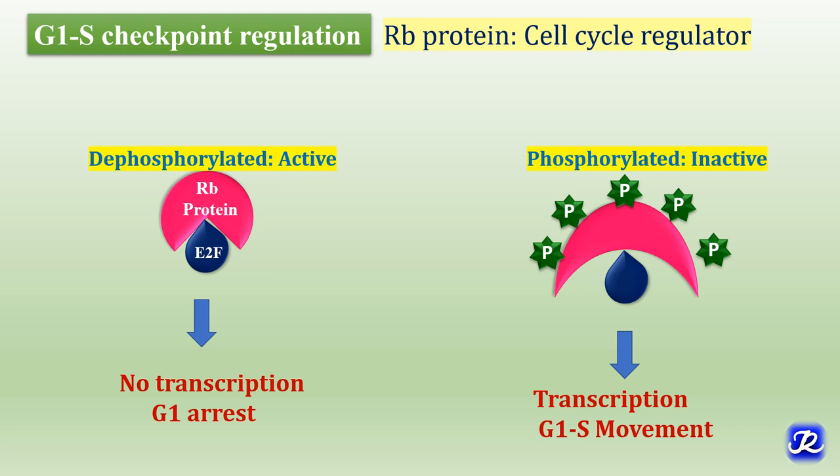Cells continuously monitor their internal and external environment. Until the conditions are suitable, cells do not undergo division and are arrested at the G1/S checkpoint. This G1 arrest is mediated by retinoblastoma protein, also called the cell cycle regulator. The RB protein is a product of the retinoblastoma gene located on chromosome 13. It is a tumor suppressor gene and it controls the progression of the cell from G1 to S phase.